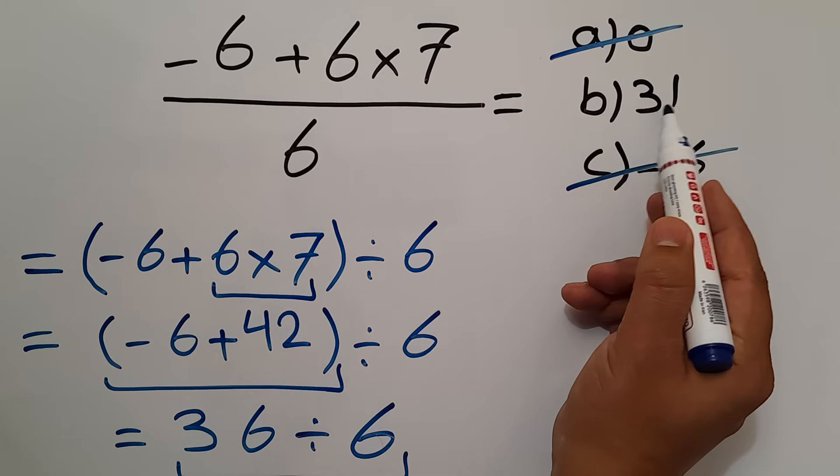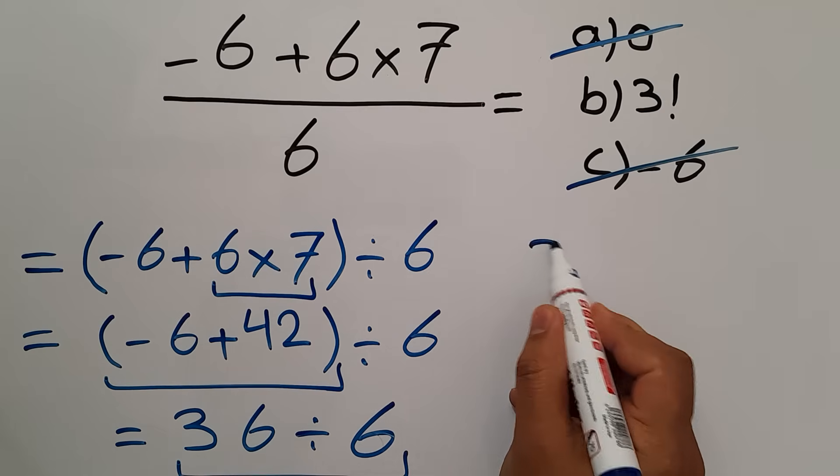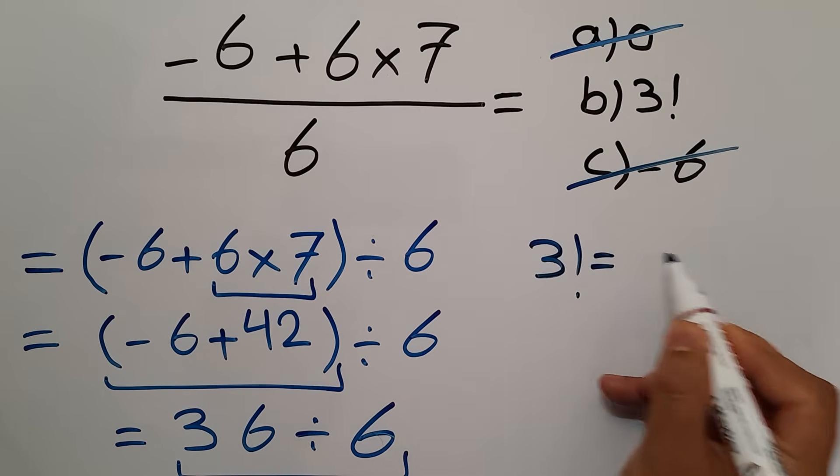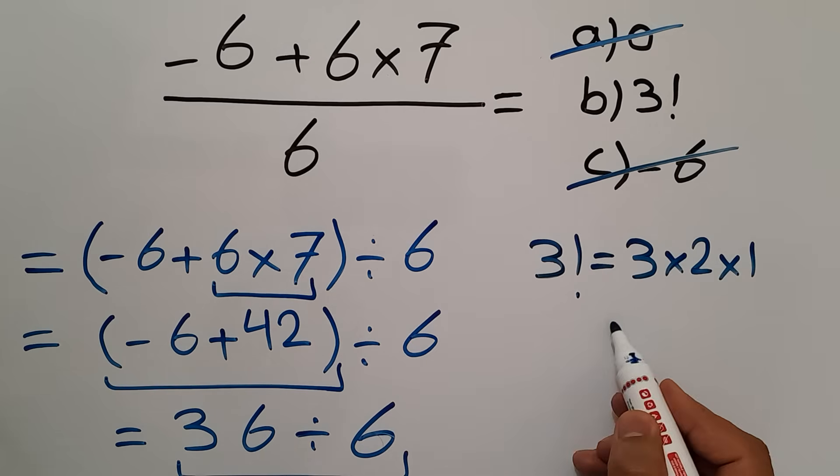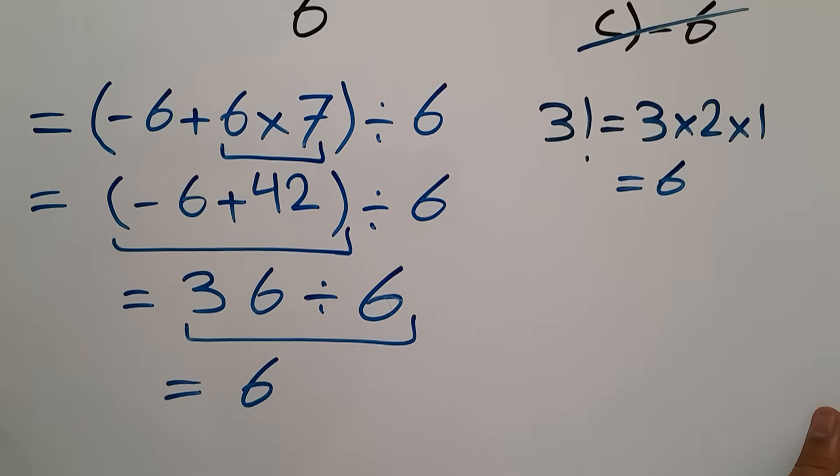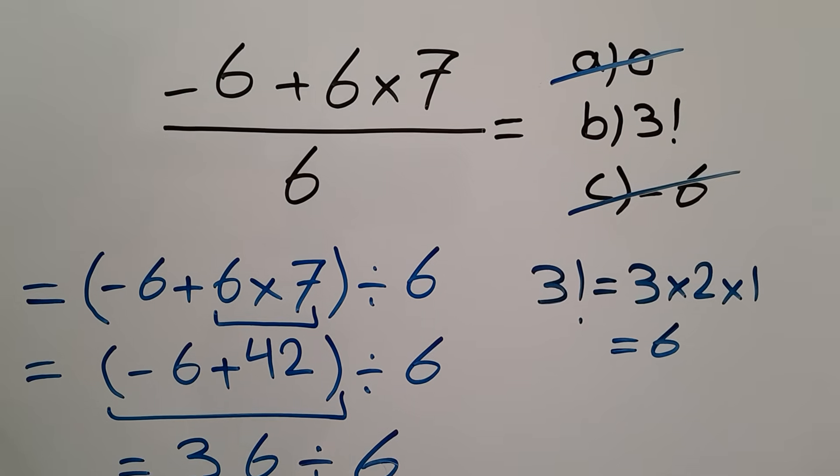We have just B, 3 factorial. 3 factorial is equal to 3 times 2 times 1. And this is equal to 6. So our final answer is option B.